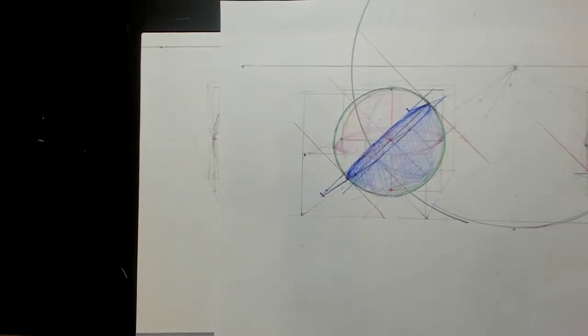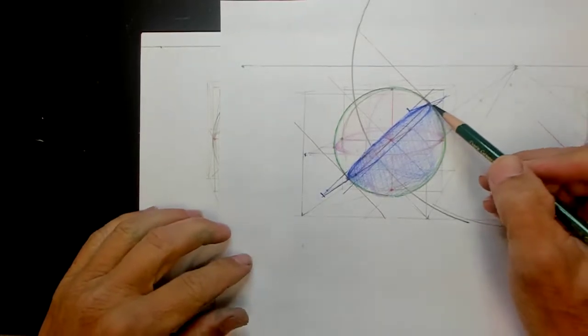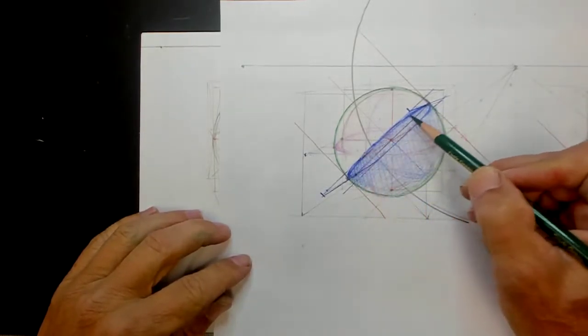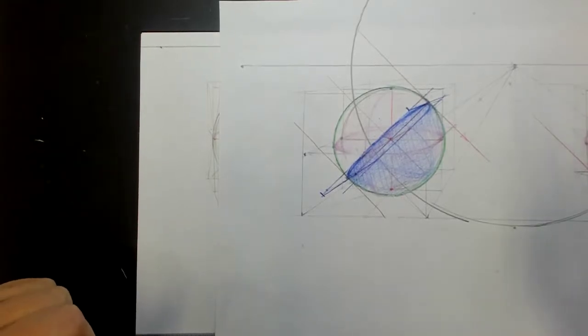We left off here on the last video. We just did a sphere and did this core shadow, which probably isn't the best term to use for this.